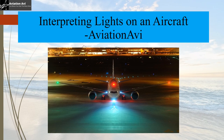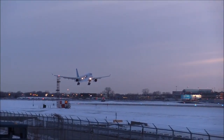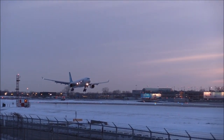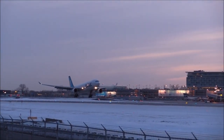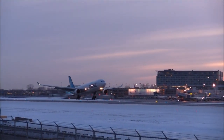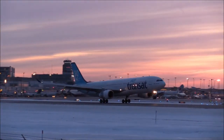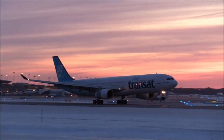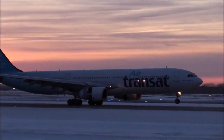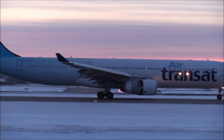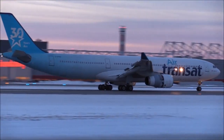Hello, welcome back to Aviation Abbey. I am Anvesha Pal and today we will be interpreting the lights that are placed on an aircraft. Every time you see an aircraft fly through the sky at night, you observe lights of different colors flickering in the sky. These flickering lights are fitted on the exterior of the aircraft and have a significance of their own.